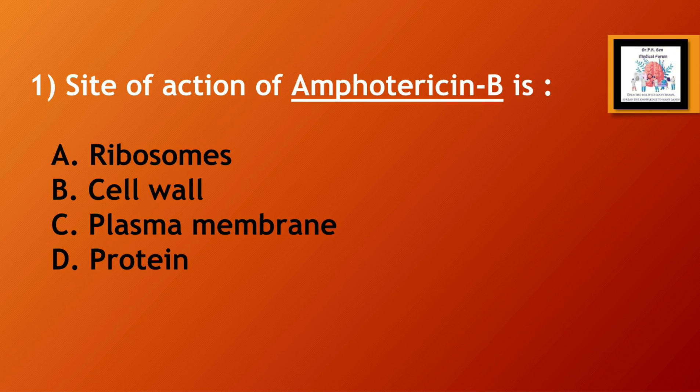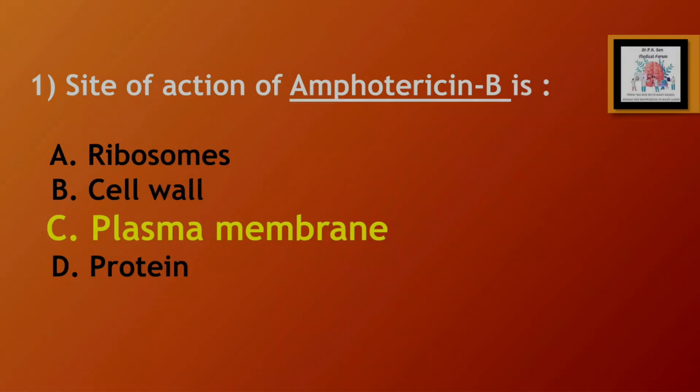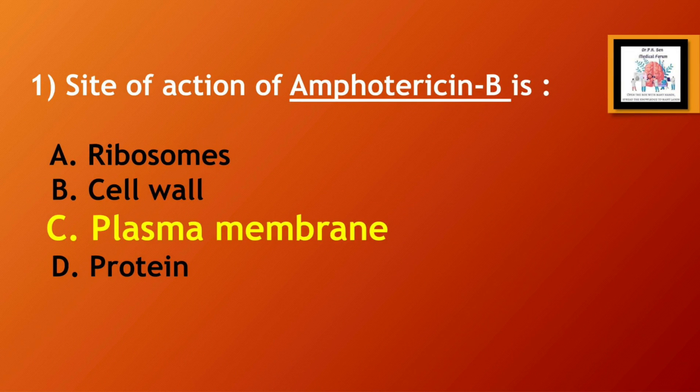Question number 1: site of action of amphotericin B is — Option A, ribosomes; Option B, cell wall; Option C, plasma membrane; Option D, protein. And the correct answer is Option C, plasma membrane.